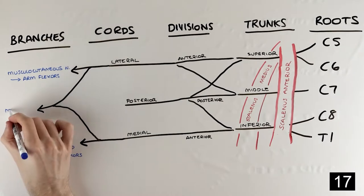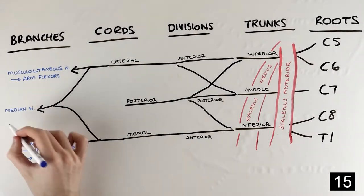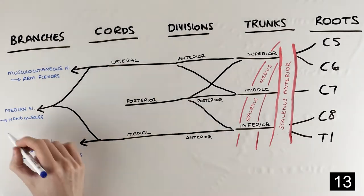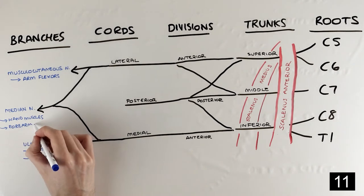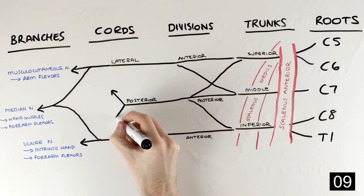These medial and lateral roots combine to form the median nerve with this classic M shape, which also does some of the muscles of the hand and most forearm flexors. Moving back to the posterior cord, it gives rise to the radial and axillary nerves.